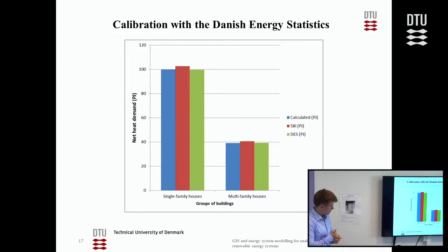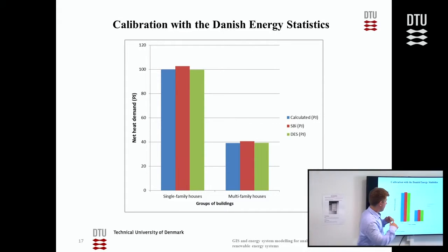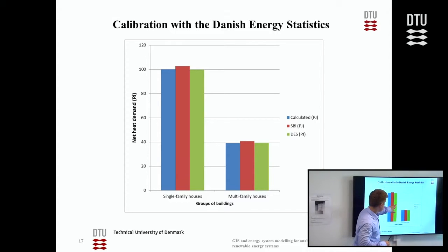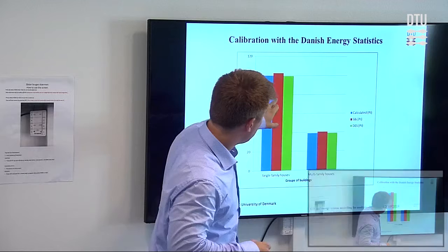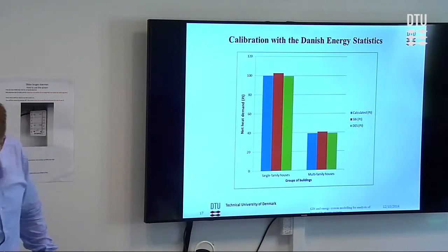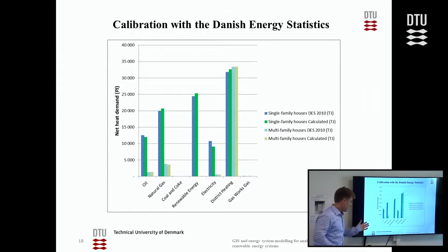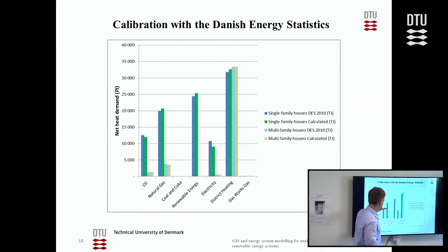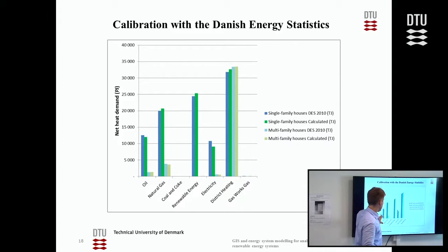These are the results of calibration. At the single-family and multi-family level, the calculated values match Danish energy statistics. SBI's numbers are a bit higher. When broken down by fuel, in some smaller building groups the mismatch can be bigger, but the idea is that this is matched on building type and fuel — Danish energy statistics calculated versus Danish energy statistics calculated.